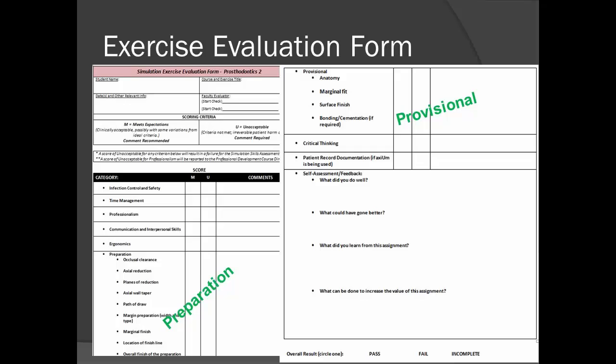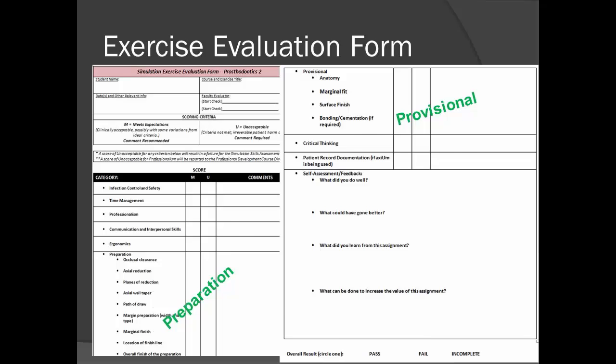Most exercises will involve both a preparation and a provisional to be fabricated, mostly at different times. Your faculty member will return your preparation form when you are ready to proceed with the provisional for that preparation. Every exercise has a rubric for evaluation purposes. These are available for downloading on Blackboard. The criteria is the same for a procedure, whether it is a simulation skills assessment or a simulation exercise. Each step must be properly accomplished in order to have a successful restoration.